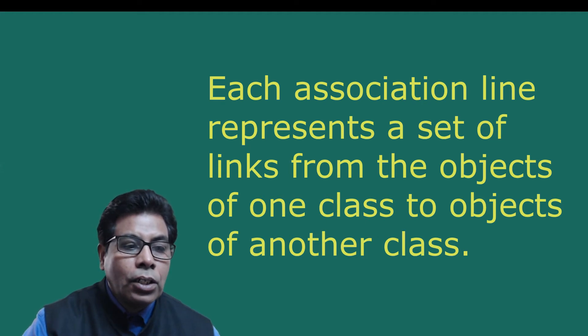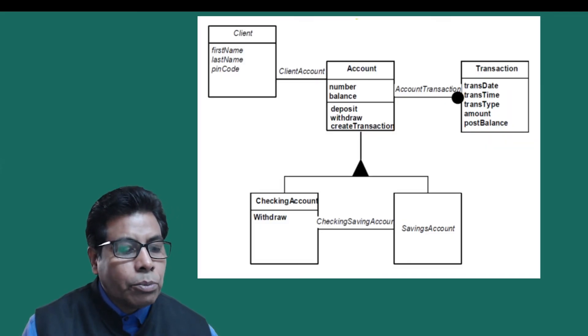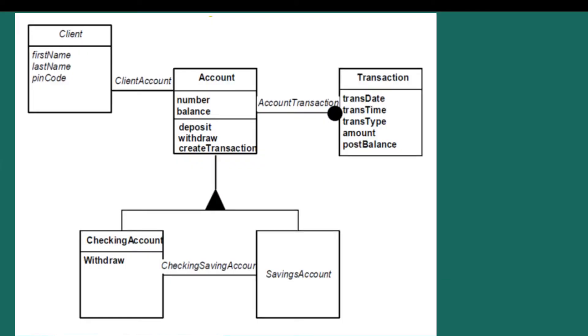Here you can see the OMT object model of a bank system. The boxes represent classes — we have Client, Account, Transaction, Checking Account and Savings Account classes. The filled triangle represents specialization. The association between the Account class and the Transaction class is one-to-many, represented by a filled circle. The association of the Client class to the Account class is one-to-one, as a client can have only one account, represented simply by a line.